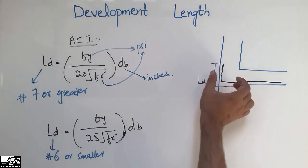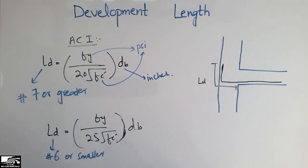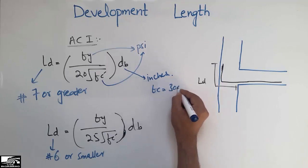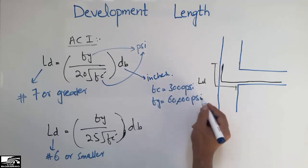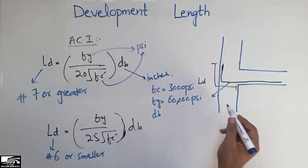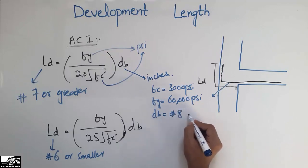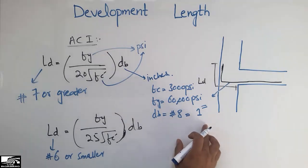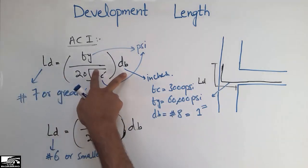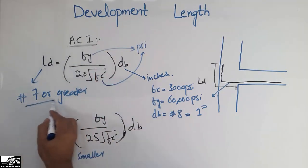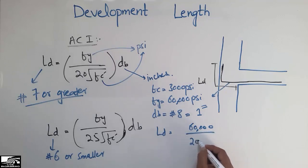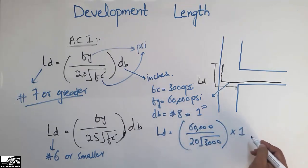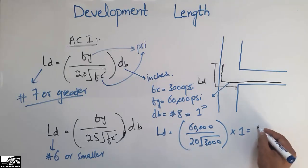For our example, let's use a concrete strength Fc' of 3,000 PSI, a yield strength of steel Fy of 60,000 PSI, and a number 8 bar with a diameter of 1 inch. Since the bar diameter is greater than number 7, we use the first equation: LD = (60,000 / 20) / √3,000 × 1 inch, giving a value of approximately 54.7, which is almost equal to 55 inches.